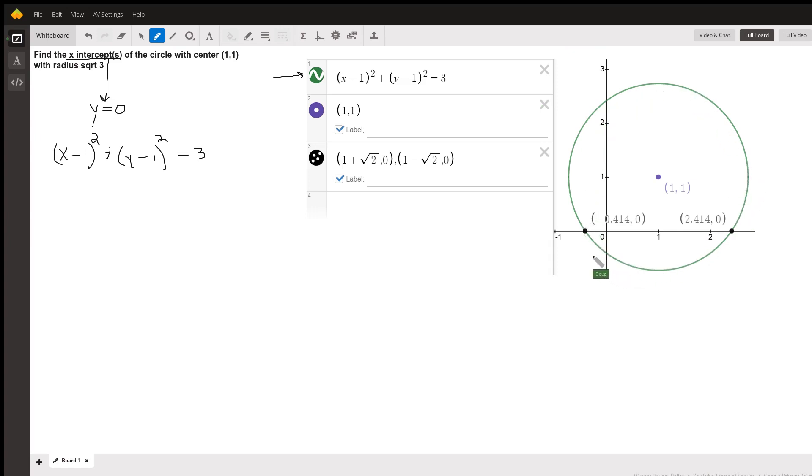We're asked to find the x-intercepts. That is the coordinates of these two points right here. It looks like those points have exact values 1 plus the square root of 2 and 1 minus the square root of 2. The question is, how do we find them algebraically?